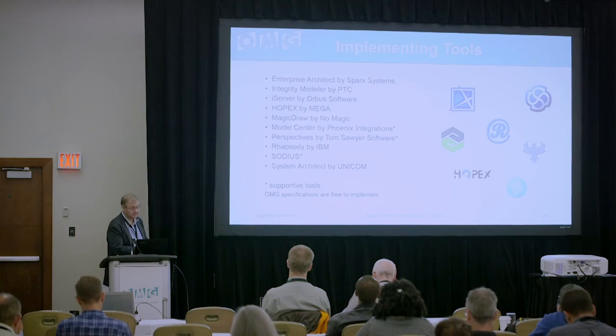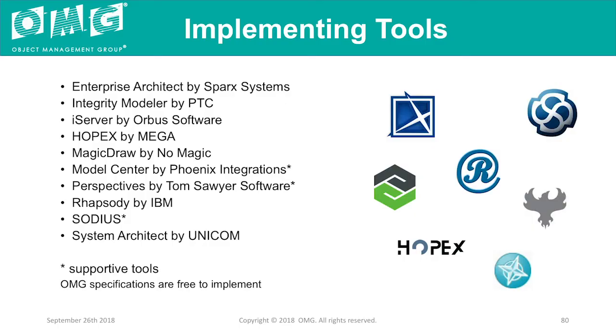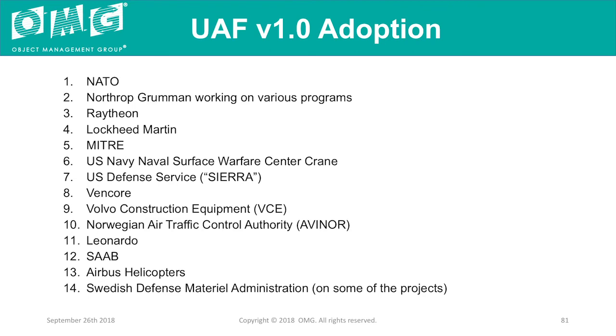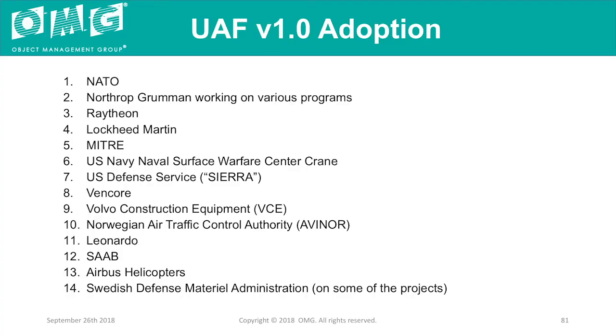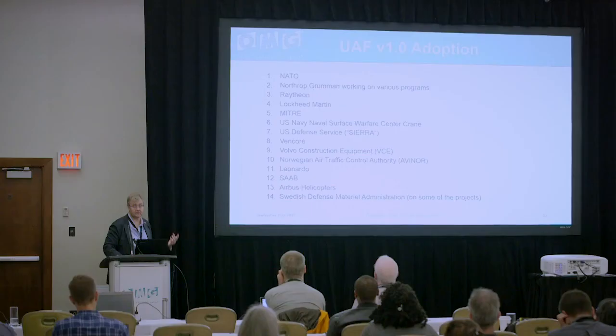Rhapsody by IBM, Sodius — who do a lot of tool integrations — and System Architect by Unicom also support UAF. In terms of UAF version 1 adoption, it's been picked up by many companies you've seen already on previous slides: NATO, Northrop Grumman, Raytheon, Lockheed Martin, MITRE, Navy, Defence, Vencore, Norwegian Air Traffic Control Authority, Volvo Construction, AVIC in China using it for air traffic control, Saab, and Leonardo. It's a growing band of people taking this seriously and starting to understand the benefits.